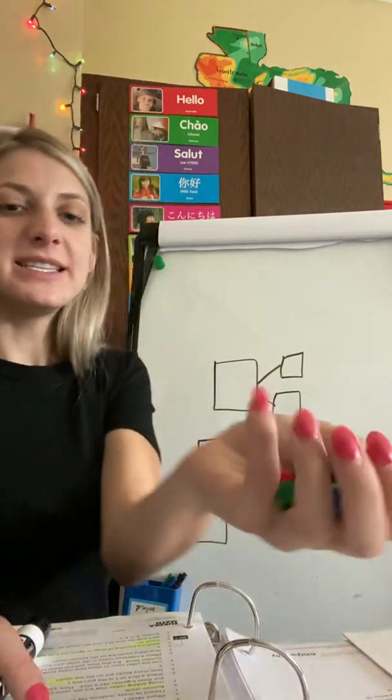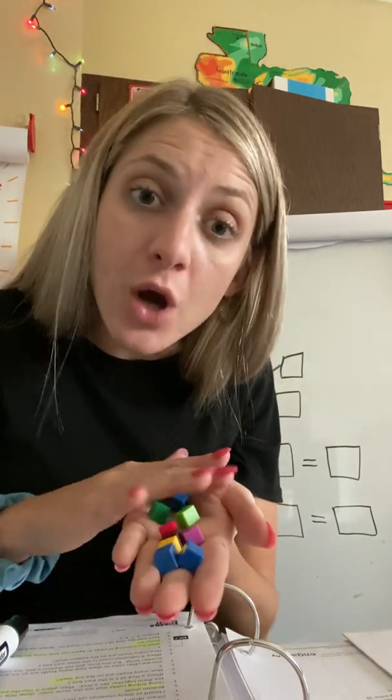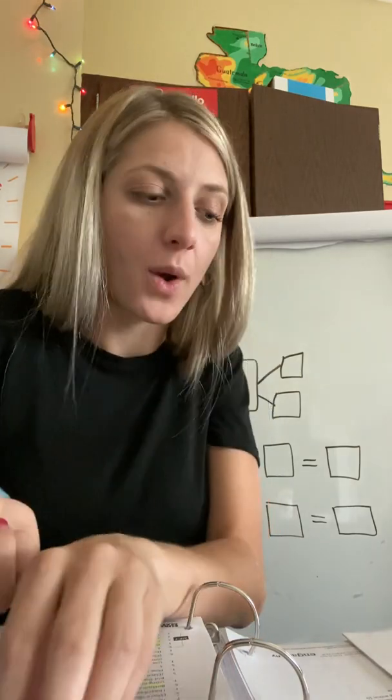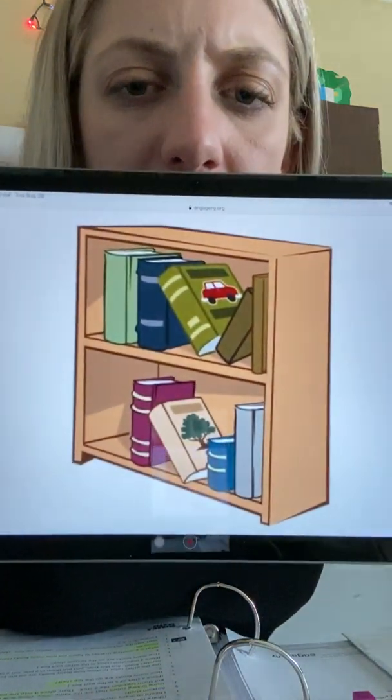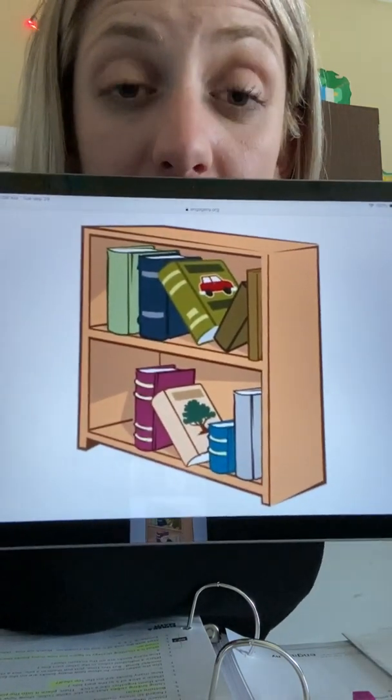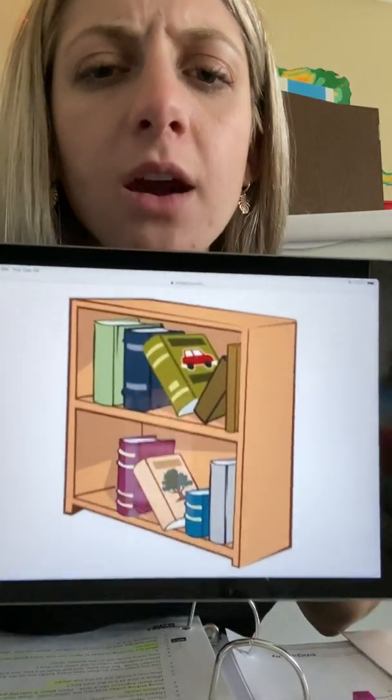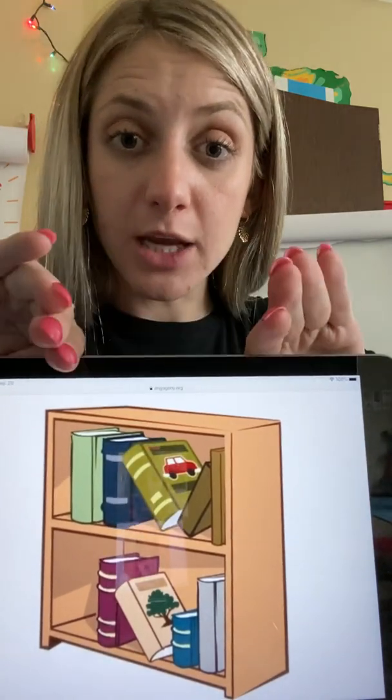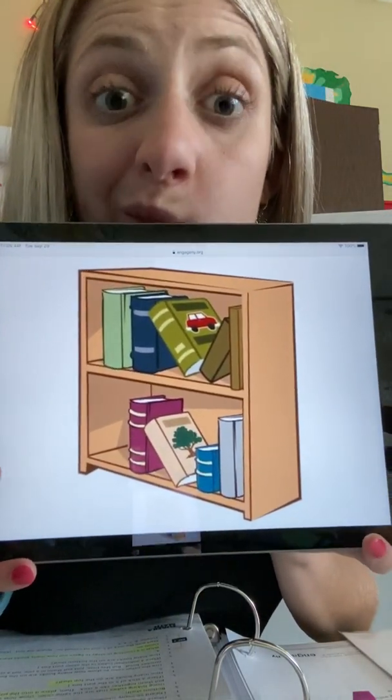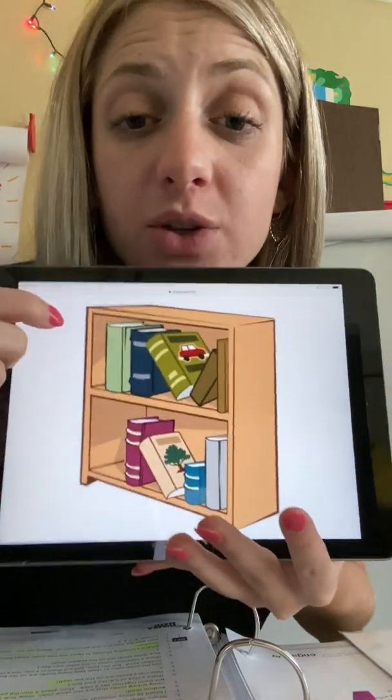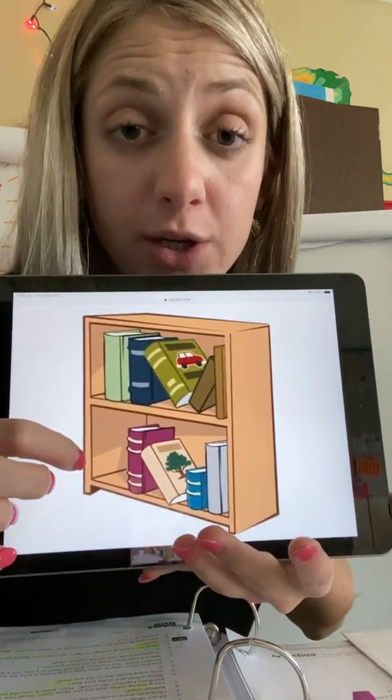I also need you to get 10 counters. So I'm going to use cubes today. If you don't have cubes, you can use pieces of macaroni, you can use pennies, coins, whatever you have that you can use as counters. I need you to get 10 of them. Okay. So here we go. Here's the picture that we're working with today. What do you see in this picture? Books. Yeah, I see books too. Can you look at this picture and think of a way that we can separate these books into two different groups? Go ahead. I want you to have an answer in your head.